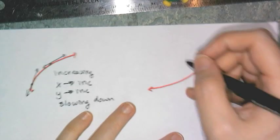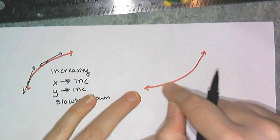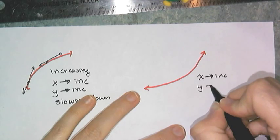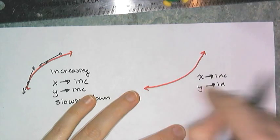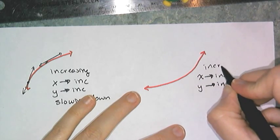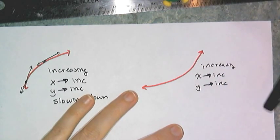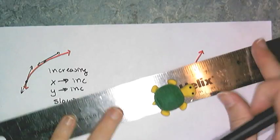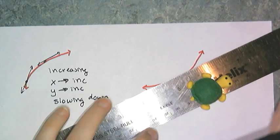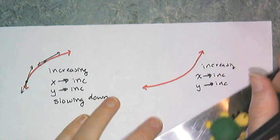I can do the same thing here. If I look at this graph, as the X increases from left to right, the Y increases. So this graph is also increasing. But if I look at this change in steepness here, I start off not so steep. But then as I travel along the curve, I get steeper and steeper and steeper.